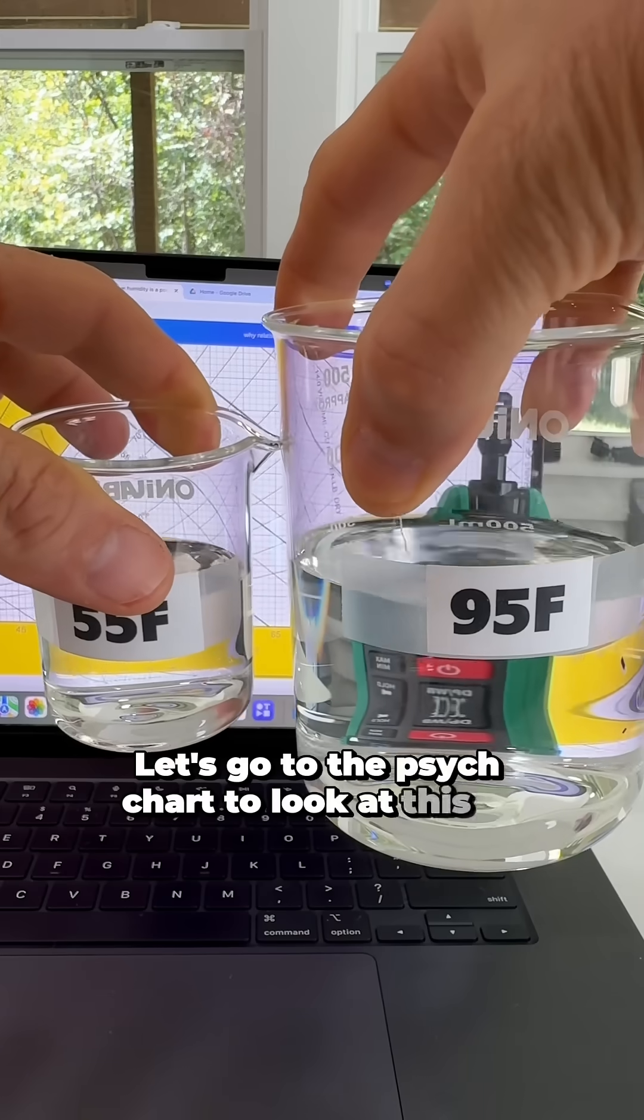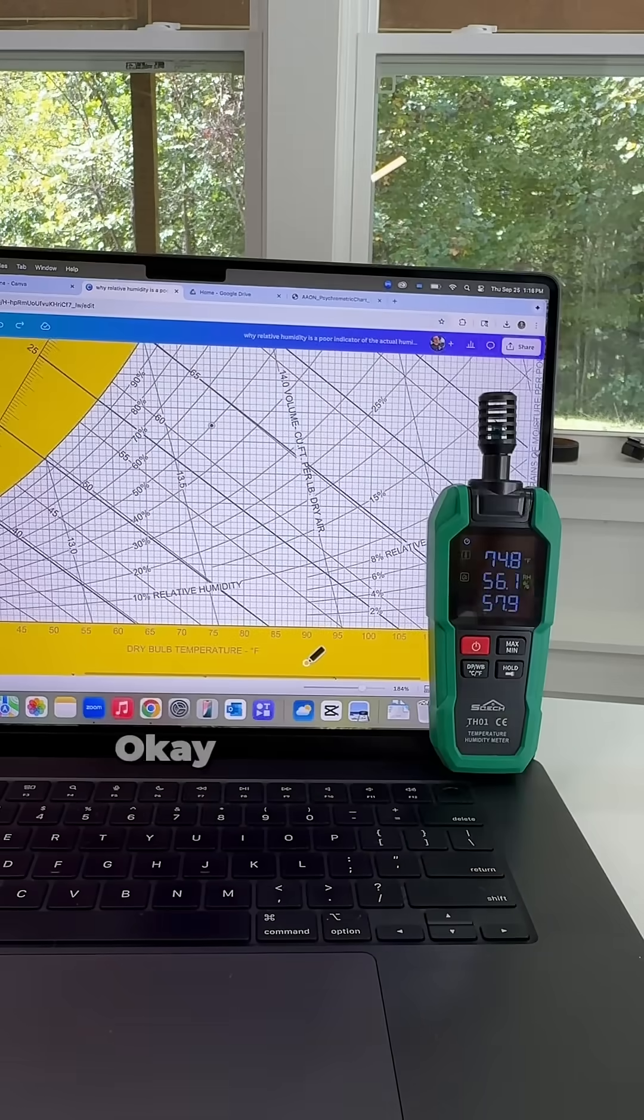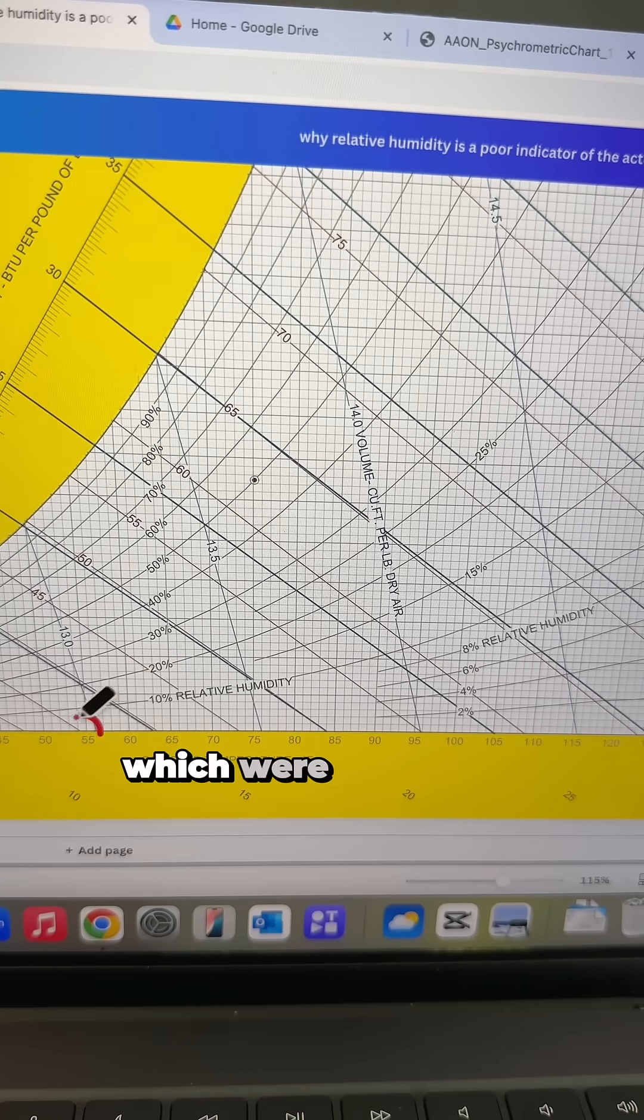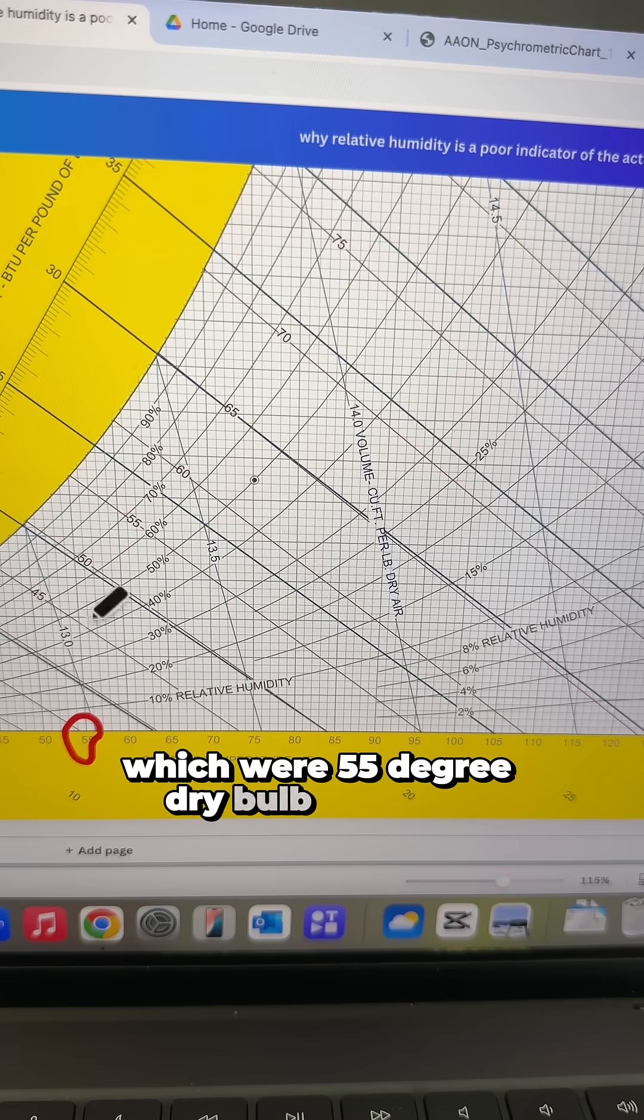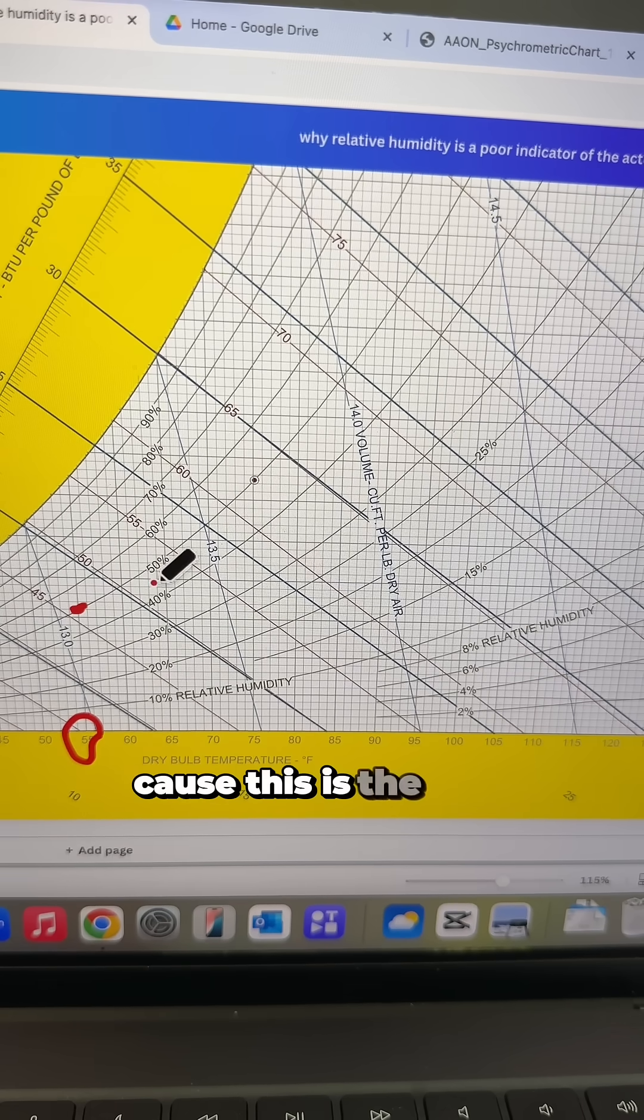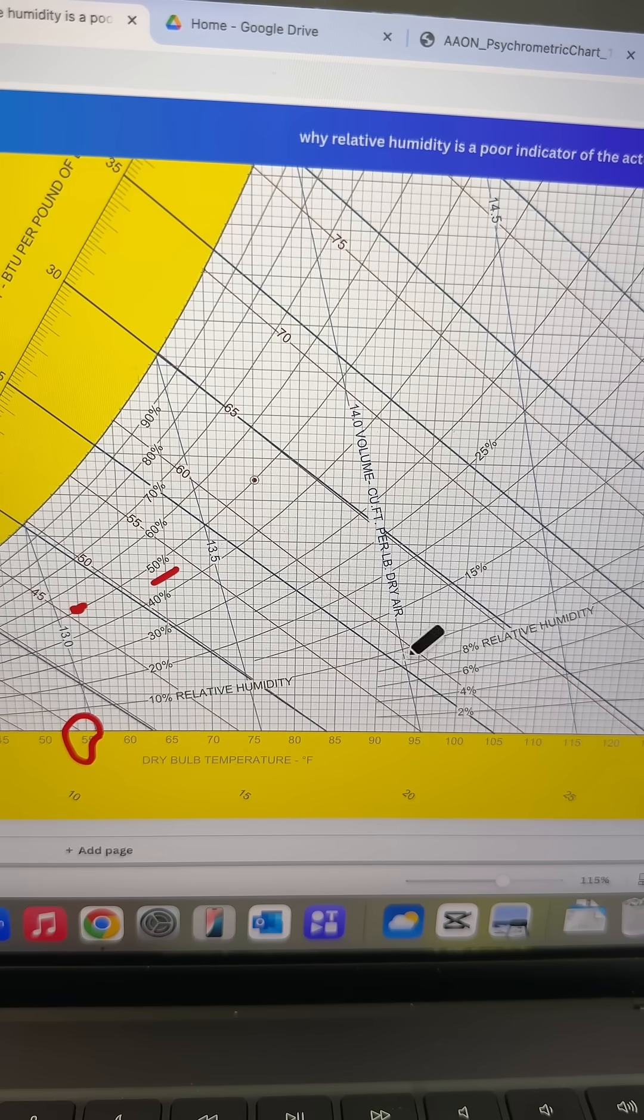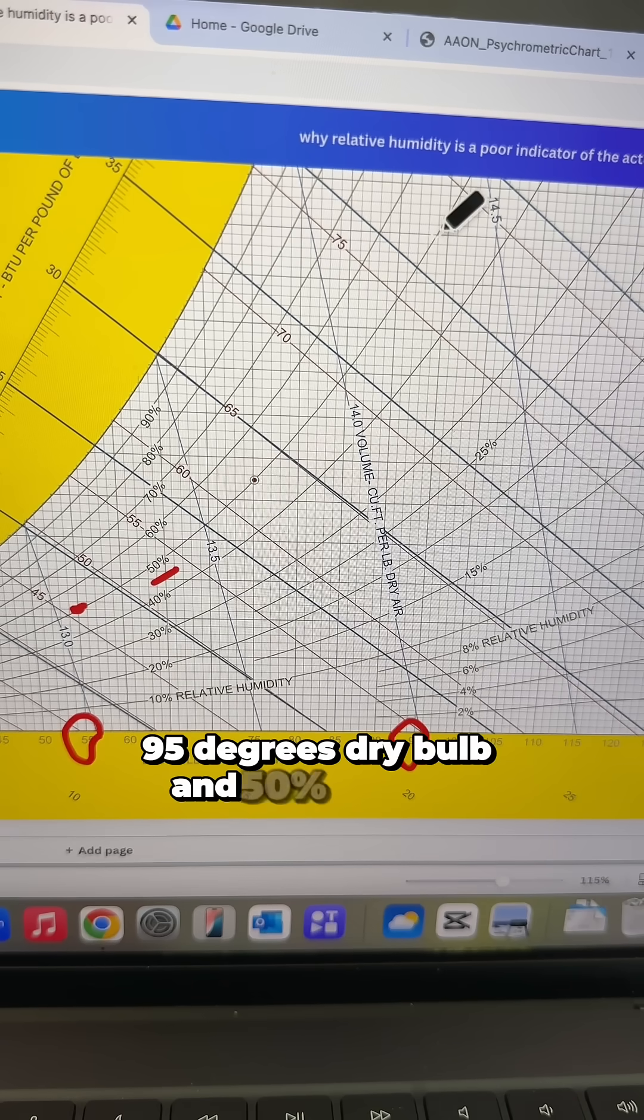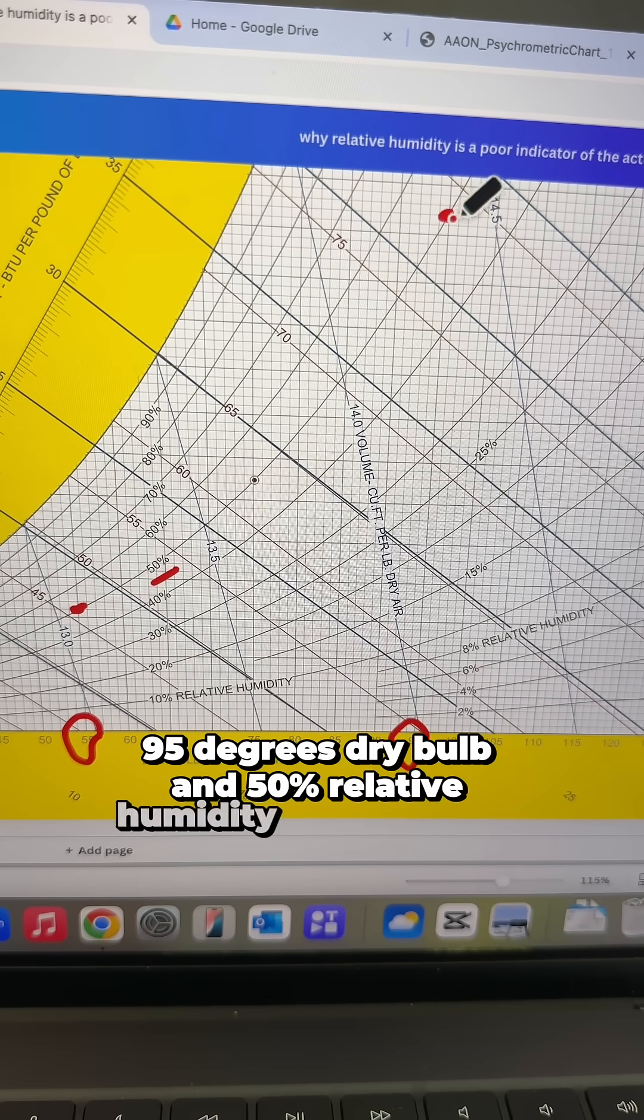Let's go to the psych chart to look at this in more detail. Okay, so let's go ahead and plot the two conditions we just looked at, which were 55-degree dry bulb and 50% relative humidity, because this is the 50% RH line, 95 degrees dry bulb, and 50% relative humidity, which is right here.